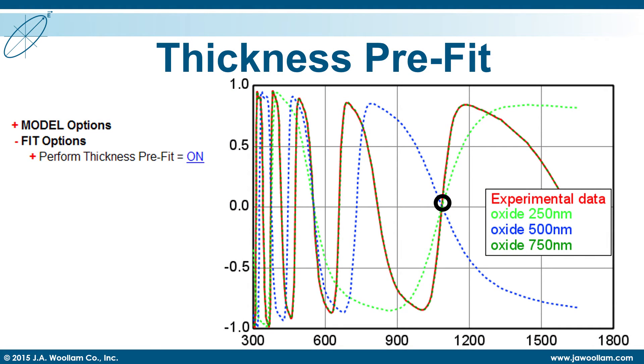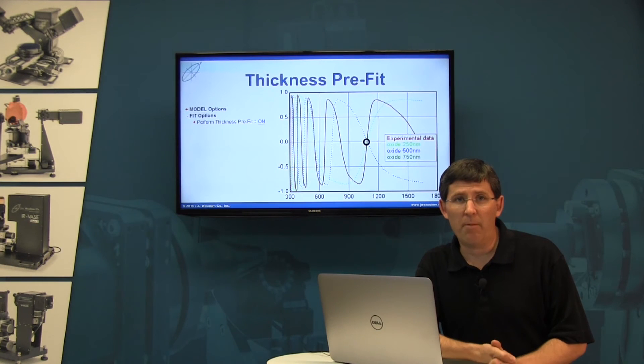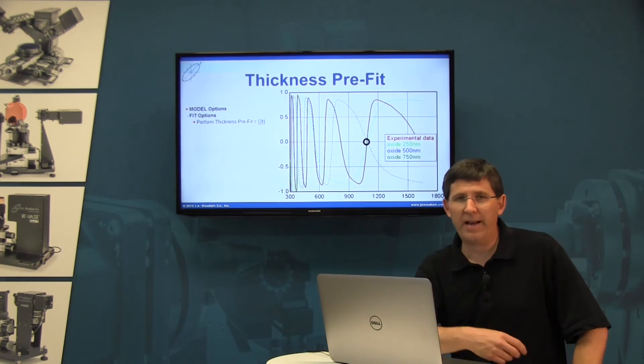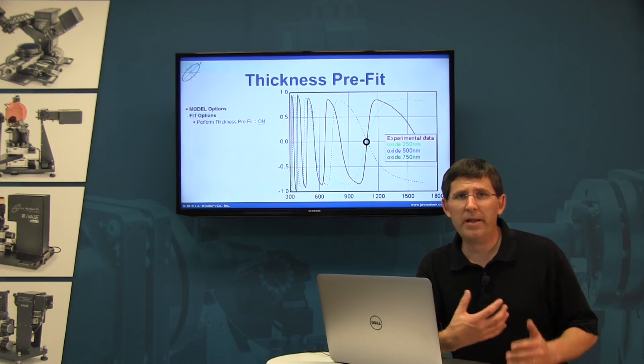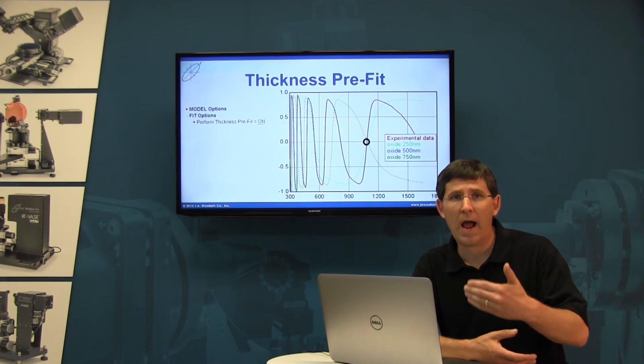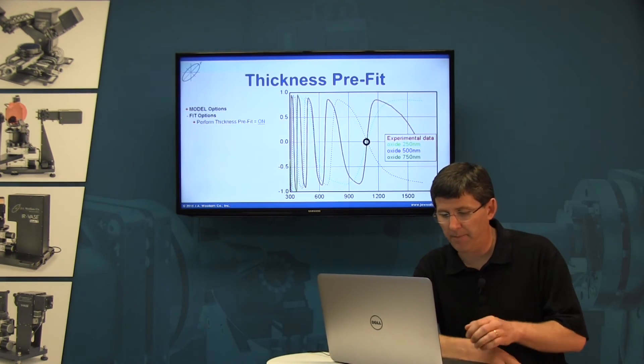And that's exactly what the thickness pre-fit was doing. It was looking at more oscillations must be a thicker film, and it was jumping to that thicker guess. It's doing that by calculating zero crossings, but basically it's just trying to reproduce how our brain processes the oscillations in the data.